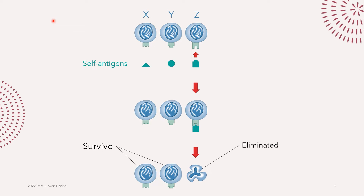Say you have clone X, clone Y, and clone Z. During lymphocyte development, all of them are exposed to self-antigens — antigens that belong to cells in our own body. If clone X cannot bind to self-antigen because the shape doesn't match, clone X will survive. Clone Y also can't bind, so clone Y will also survive clonal deletion. But clone Z happens to have receptors that match self-antigens, so when that binding happens, the whole members of clone Z will be deleted — none of them will leave the primary lymphoid organs.